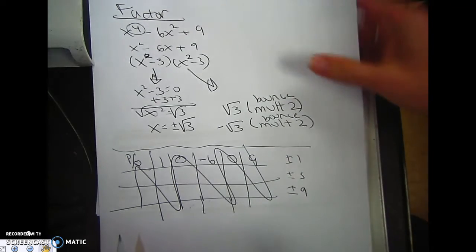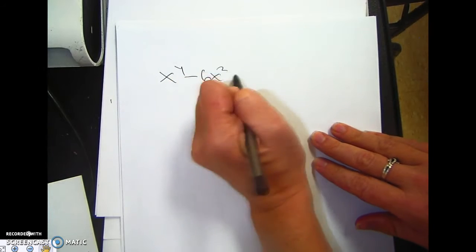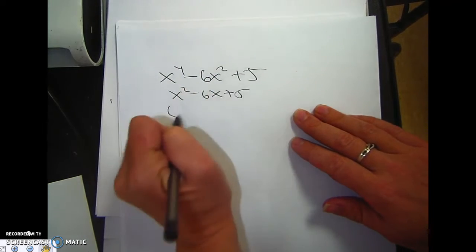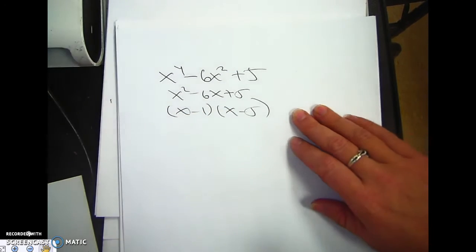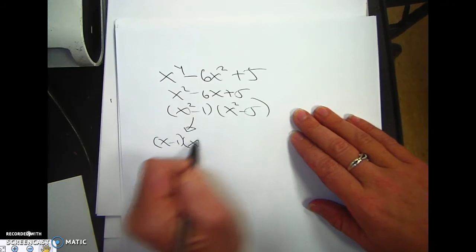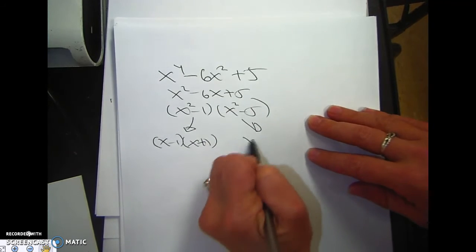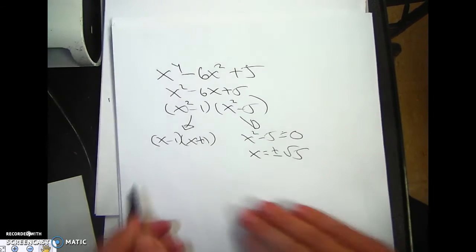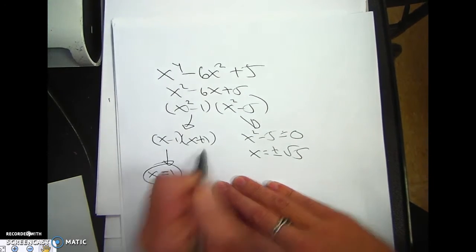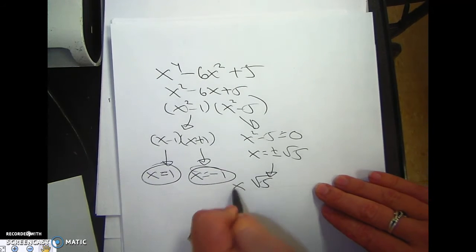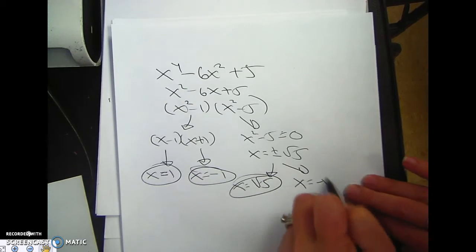But I want to point out if you had one like this. Let's say it was x to the fourth minus 6x squared plus 5. That would be x squared minus 6x plus 5, which is x minus 1, x minus 5. Then you put in the x squared. This is x minus 1, x plus 1. This ends up giving you x squared minus 5 equals 0, x equals plus or minus rad 5. So my roots would be 1, negative 1, rad 5, and negative rad 5.